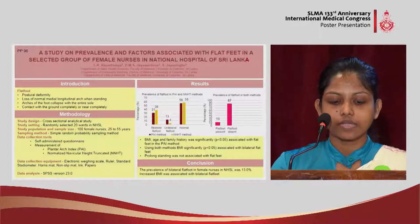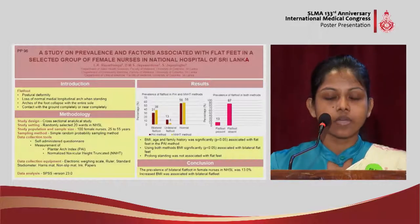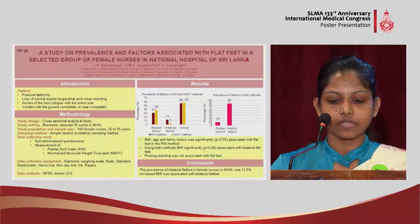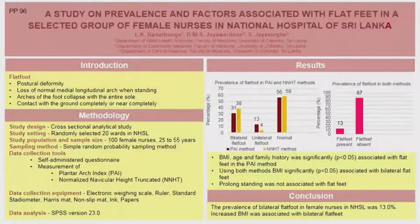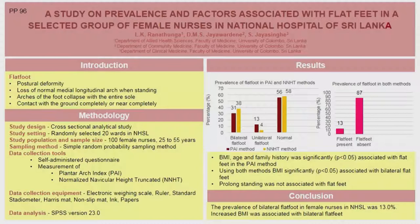This is a hospital-based cross-sectional analytical study. 100 female nurses with more than one year of service and age between 25 to 55 years were randomly selected from 20 wards using simple random probability sampling method. Nurses with diabetes, arthritis such as osteoarthritis, rheumatoid arthritis, and foot injuries were excluded. A self-administered questionnaire was used to collect data regarding factors such as age, number of hours standing per day, and whether their parents have flat feet. The plantar arc index was calculated as the ratio of the area of the middle third of the footprint to the entire footprint area without including the toes.